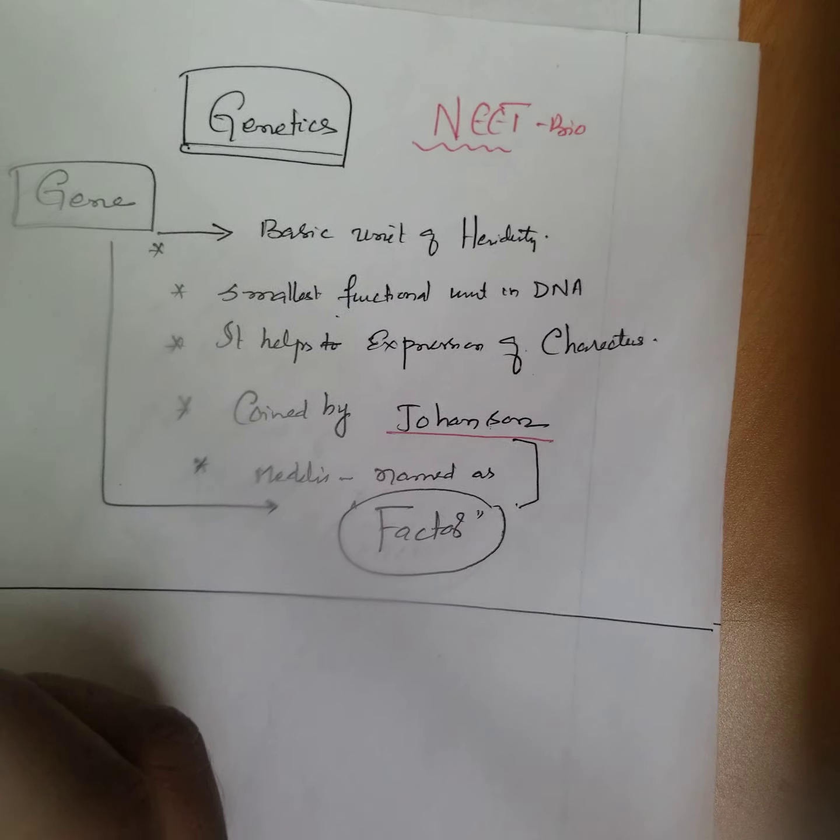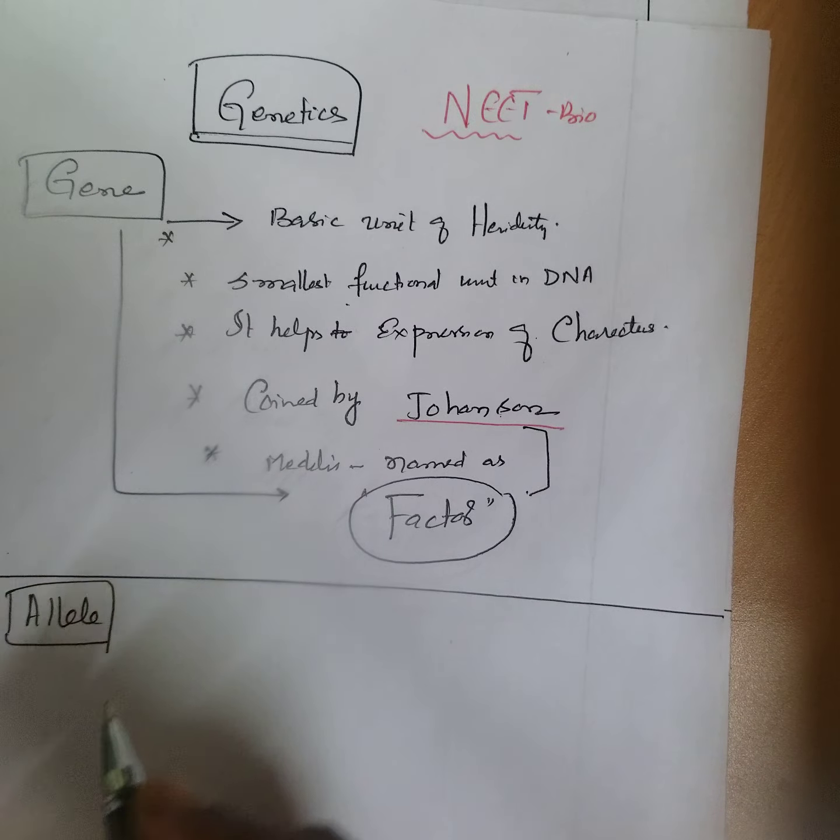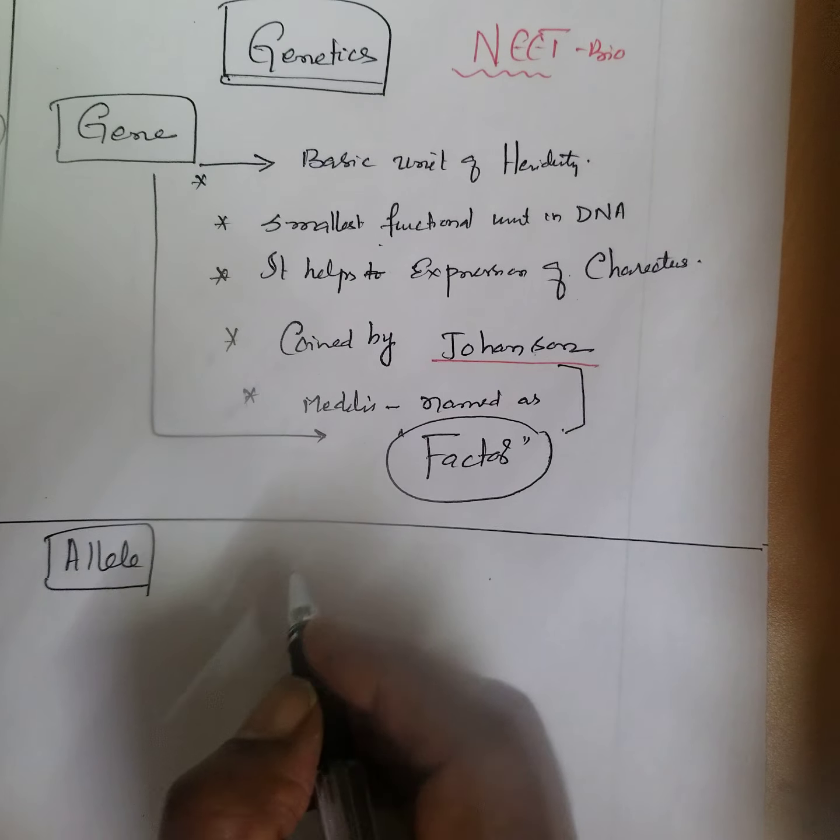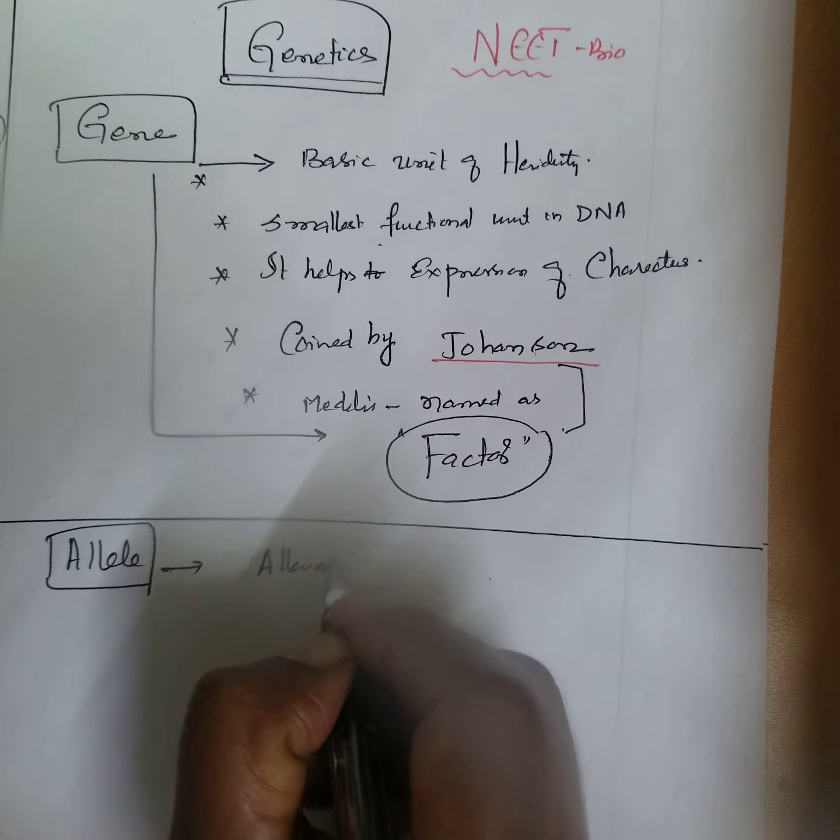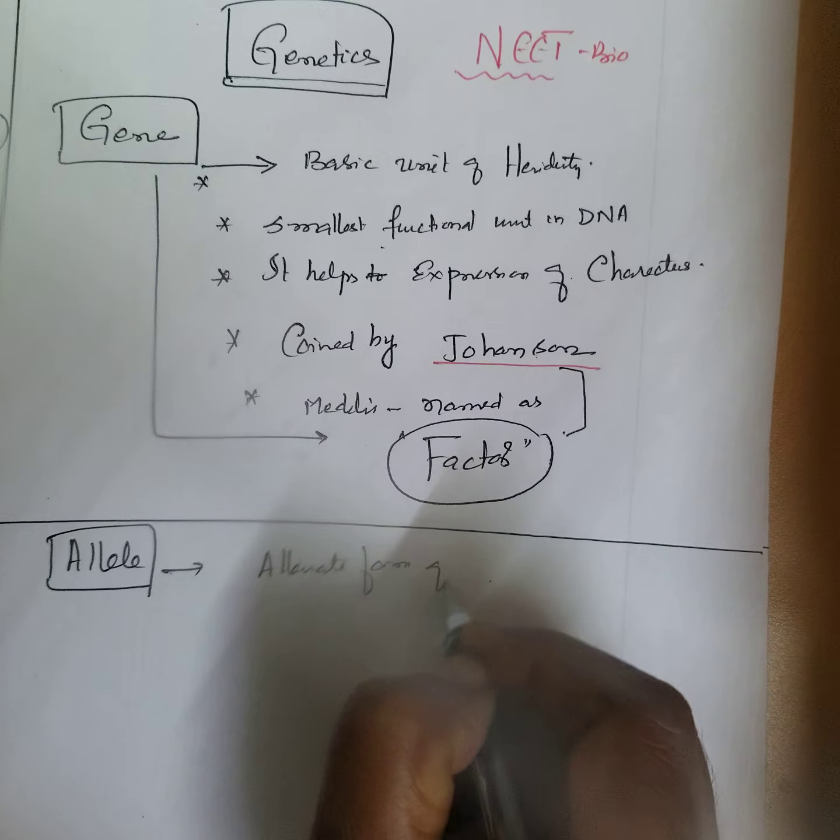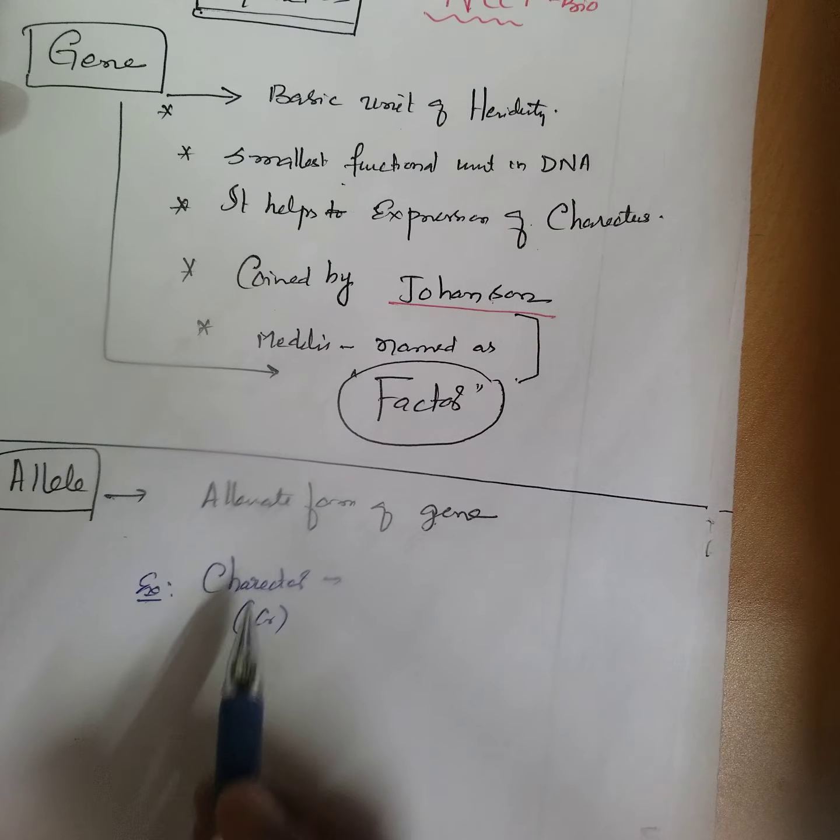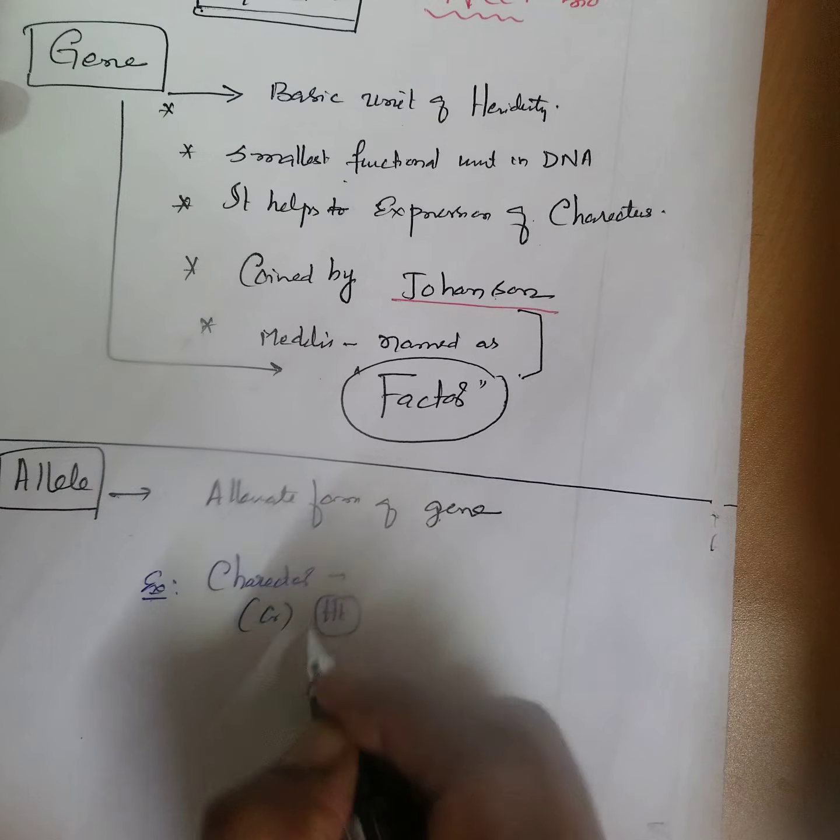What is allele? Allele is the alternate form of a given gene. For example, you take a character like height. Height is a character.